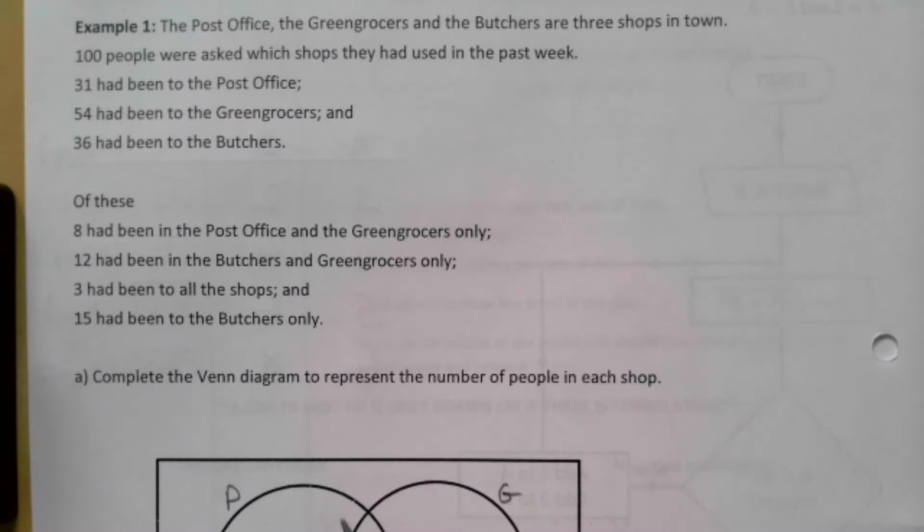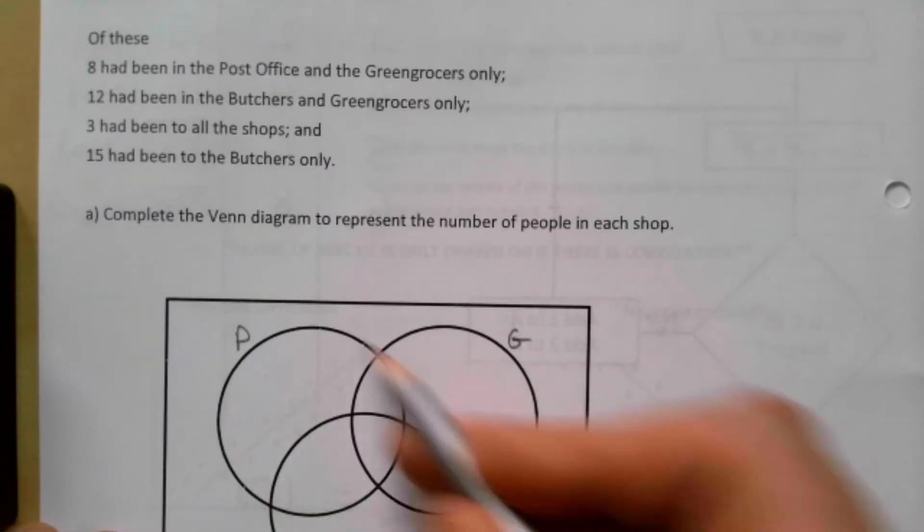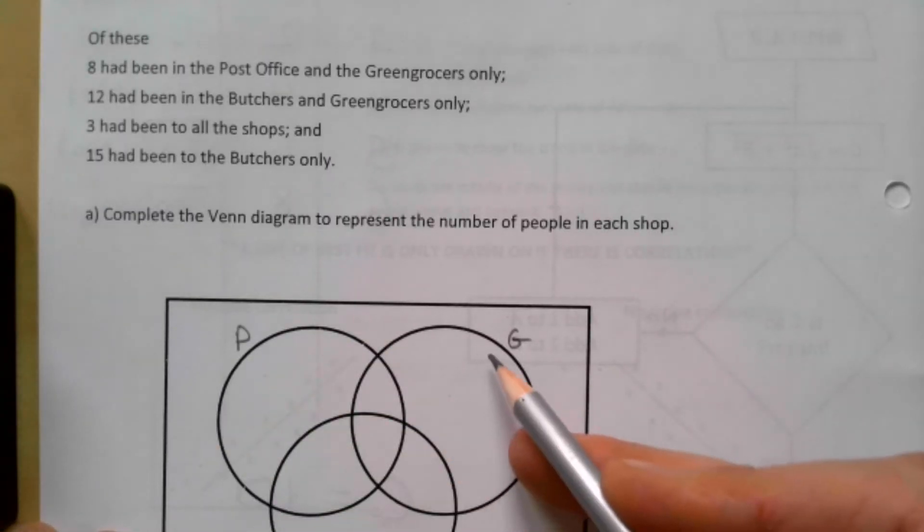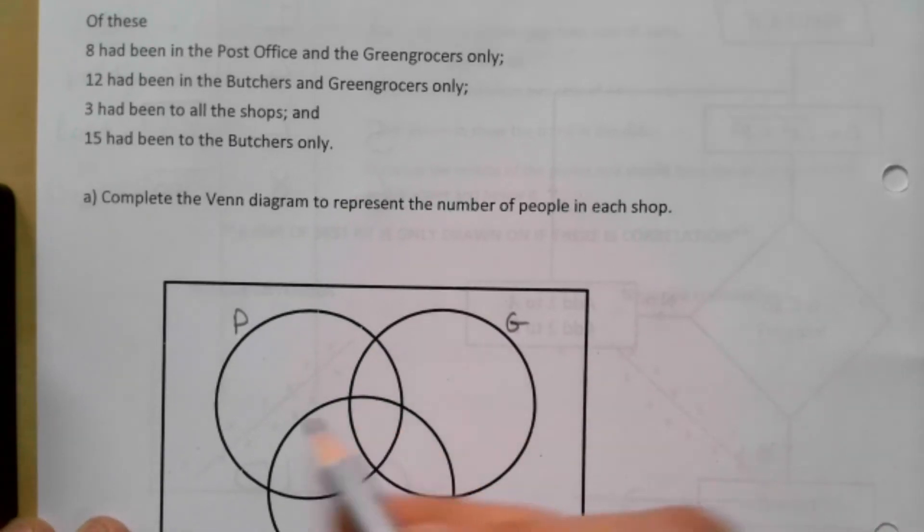31 had been to the Post Office, so this whole circle is 31. 54 is the Greengrocers and then Butchers is 36.